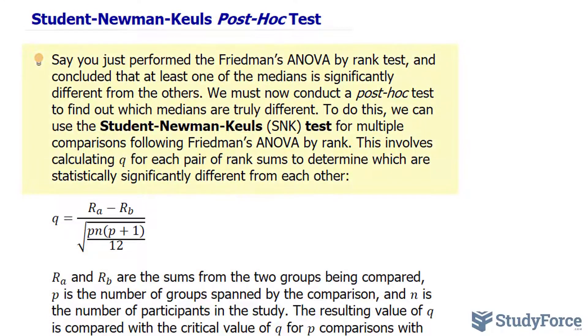Say you just performed the Friedman ANOVA by rank test and concluded that at least one of the medians is significantly different from the others. We must now conduct a post-hoc test to find out which medians are truly different. To do this, we can use the Student-Newman-Keuls test for multiple comparisons following Friedman's ANOVA by rank. This involves calculating Q for each pair of rank sums to determine which are statistically significantly different from each other.